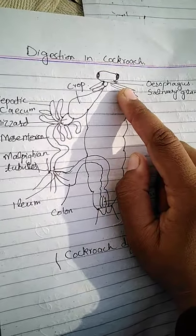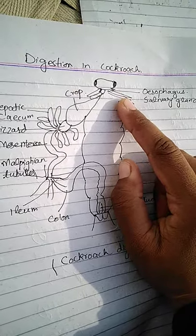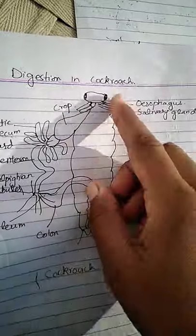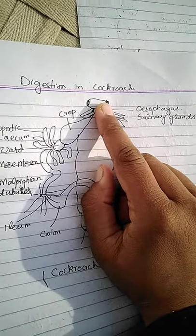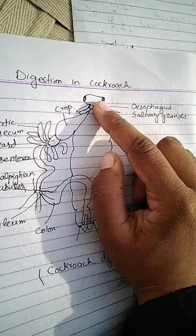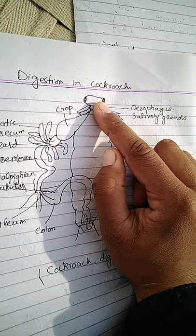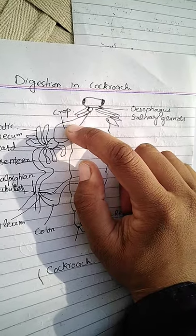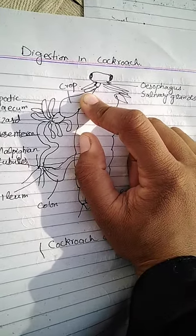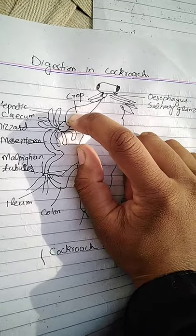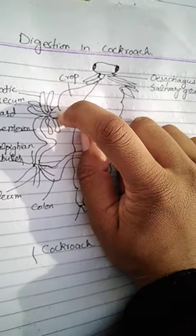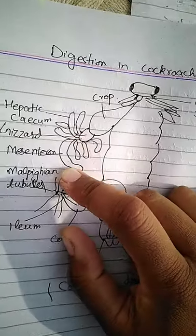Cockroaches are omnivorous — they can eat all types of food. In common observation, you can see that they eat all materials present in your homes. For cutting food, they use their strong mandibles, which are the jaws. They cut food particles into smaller pieces, then the salivary glands release saliva containing enzymes for digestion of carbohydrates. Food is then passed into the crop, which is a temporary storage organ. Food leaves the crop chunk by chunk and enters the gizzard, which grinds the food. Hepatic caeca release enzymes mixed with the food, and in the midgut digestion of food is completed.